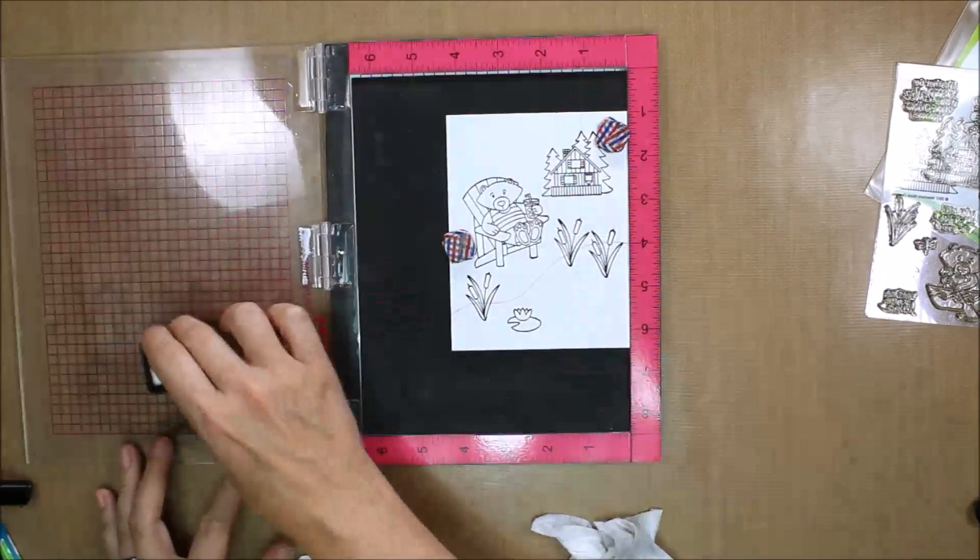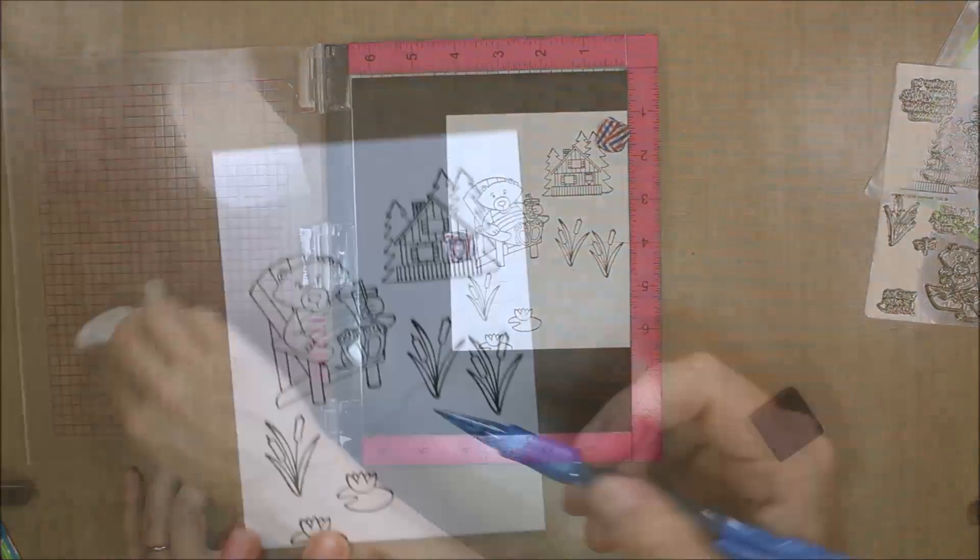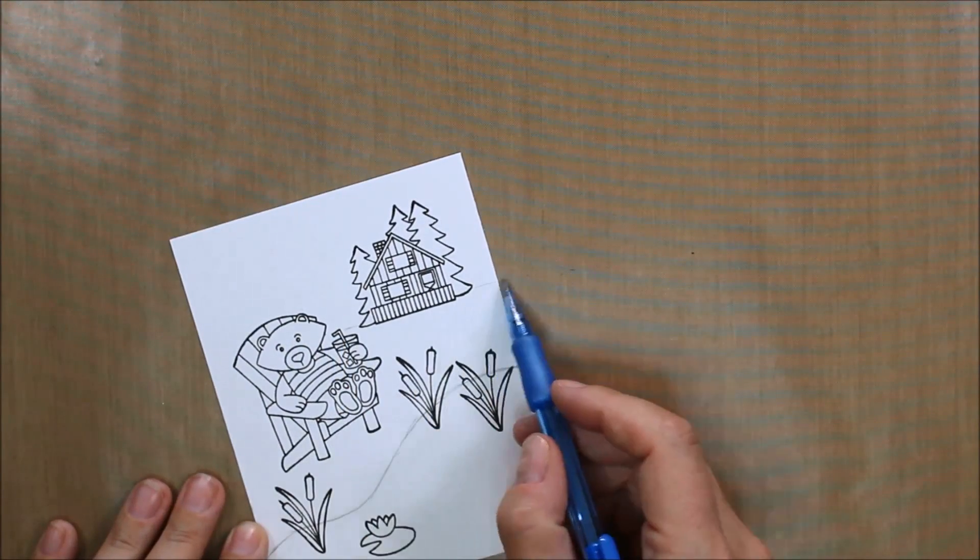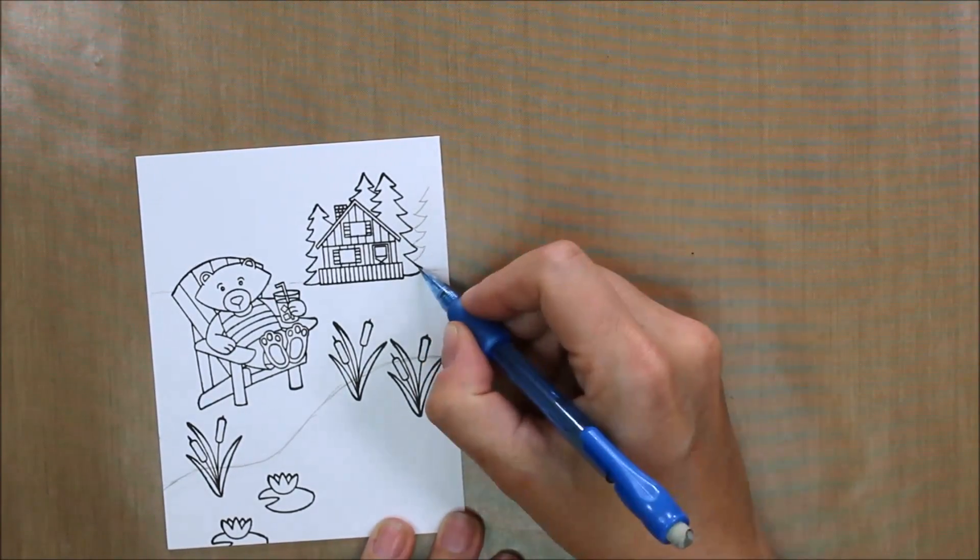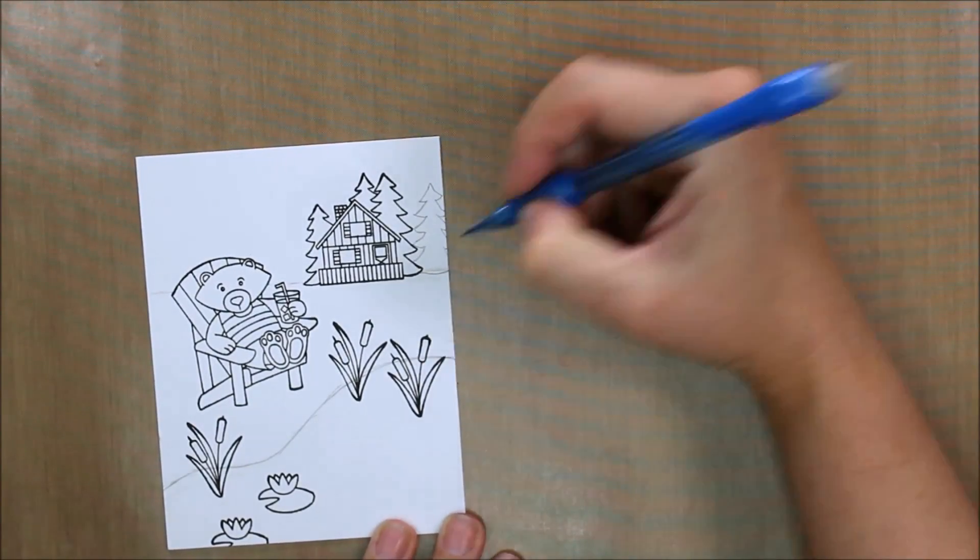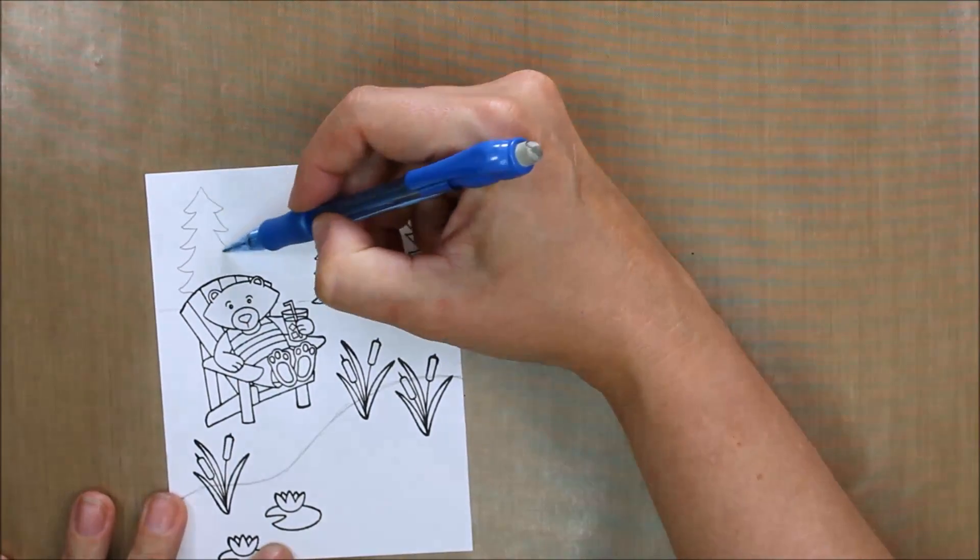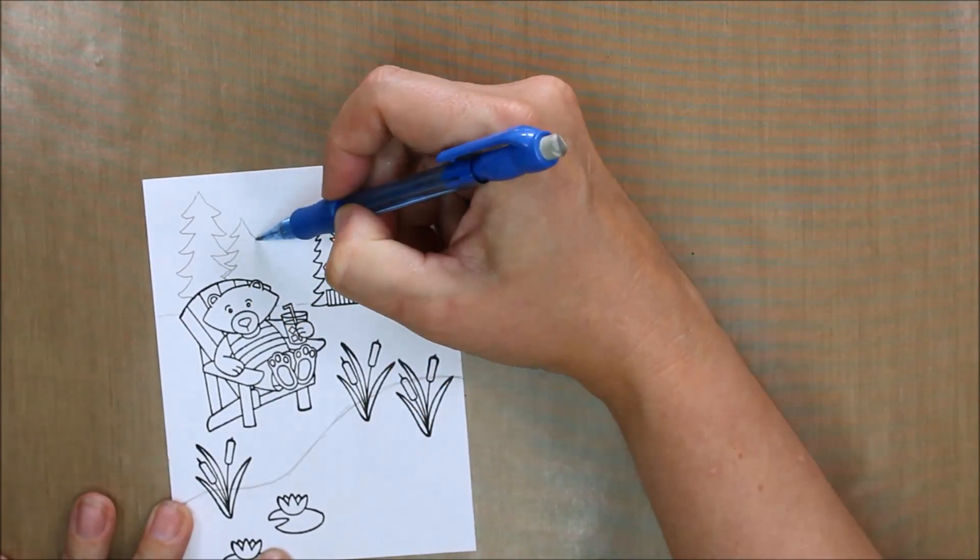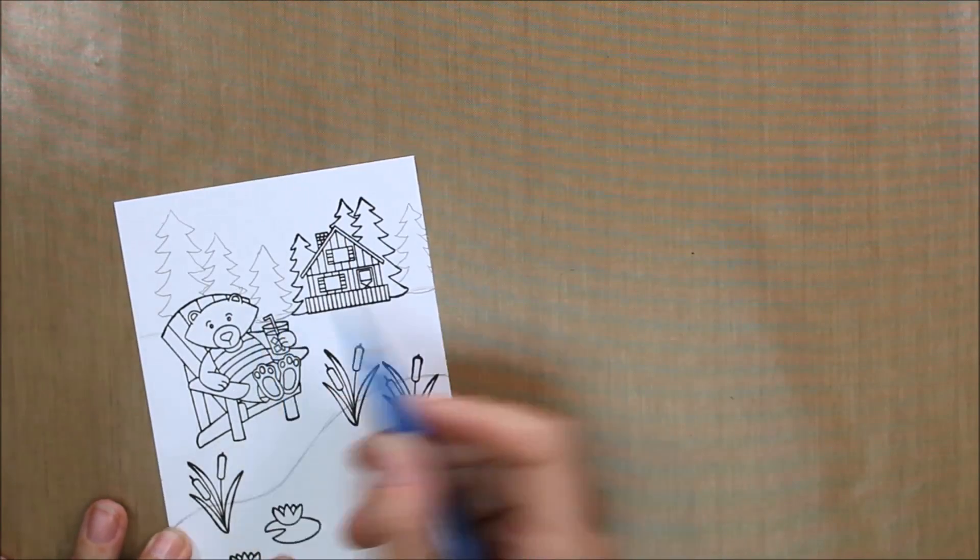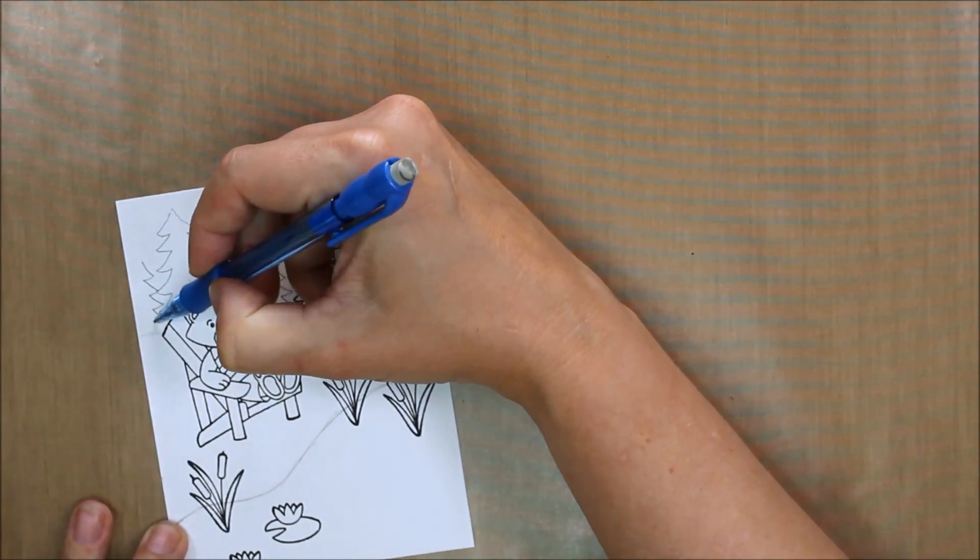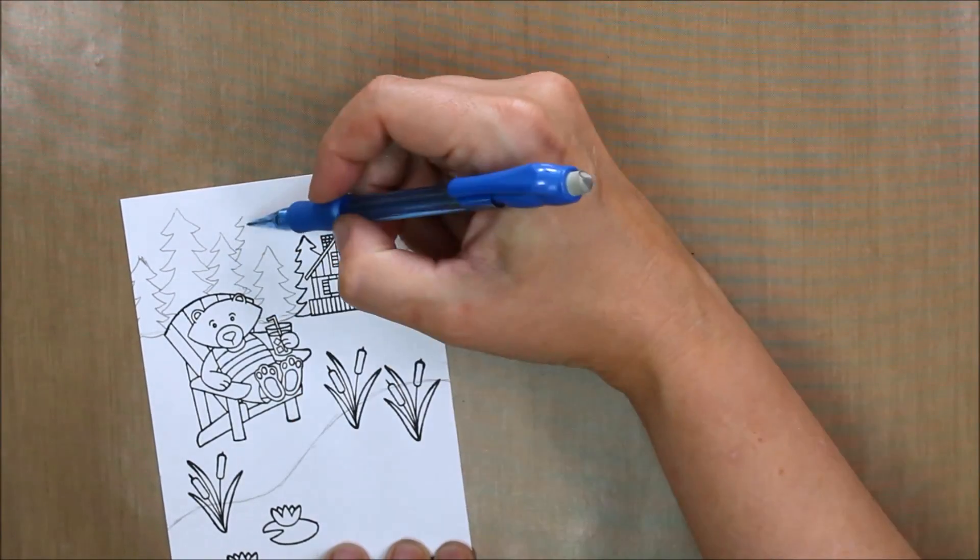The stamps give you a cue for how to create a scene because the house is smaller than Winston. If they were standing right next to each other, it would look like Winston was huge or the house was tiny. So from the size of the stamps, you know the house has to go into the background and look further away. The cattails and lily pads are more in scale with Winston so he can be closer to those elements.